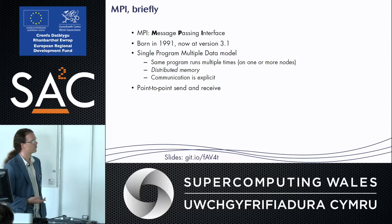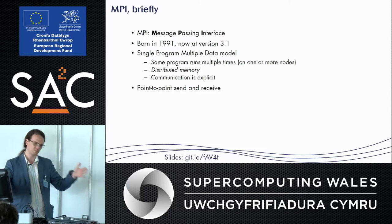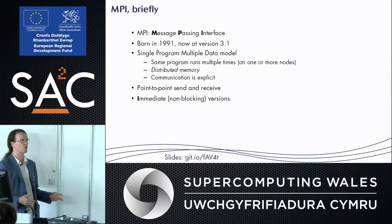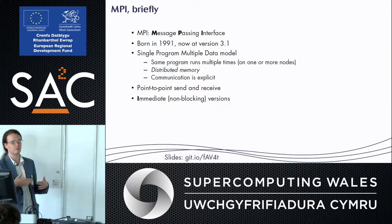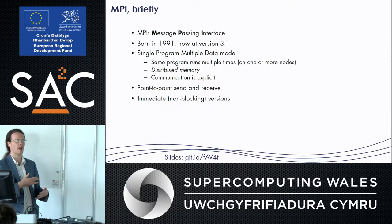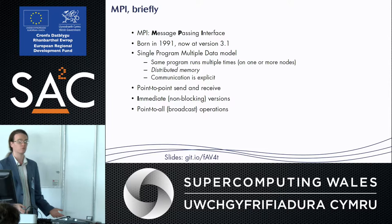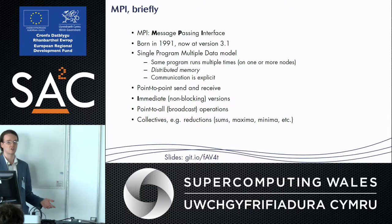The communication is explicit — you tell the program when you want to pass a message. The library provides point-to-point send and receive, for example sending a message from node 1 to node 5. There are also immediate versions — MPI_Isend — where the 'I' stands for immediate, meaning it returns immediately. That's non-blocking communication. In the default versions you wait until the message arrives; in non-blocking you carry on executing. There are also broadcast operations and collective operations like reductions where you do a sum across the set of processes.